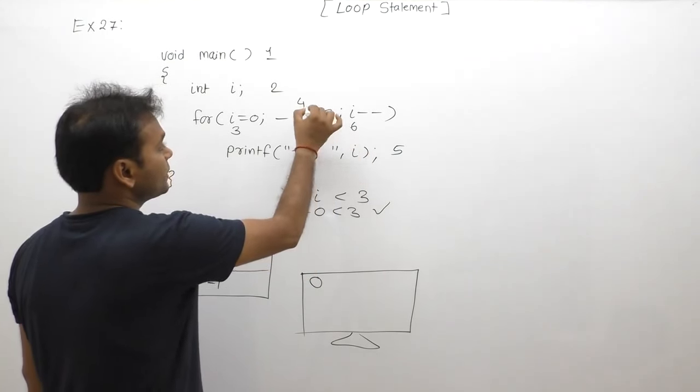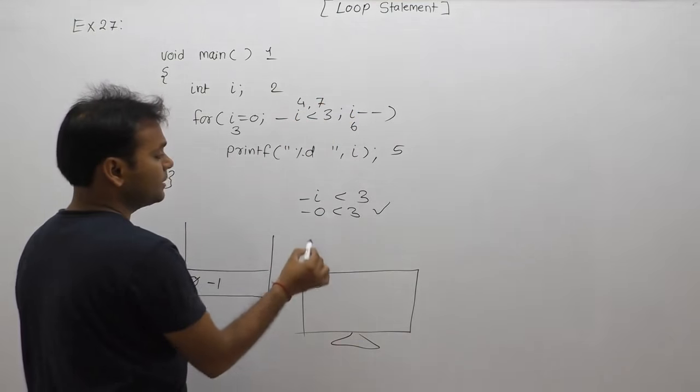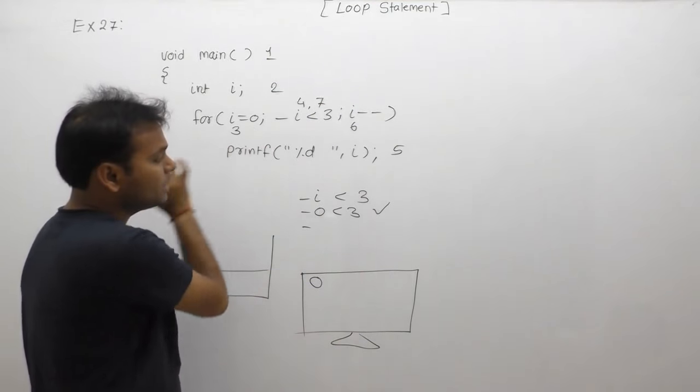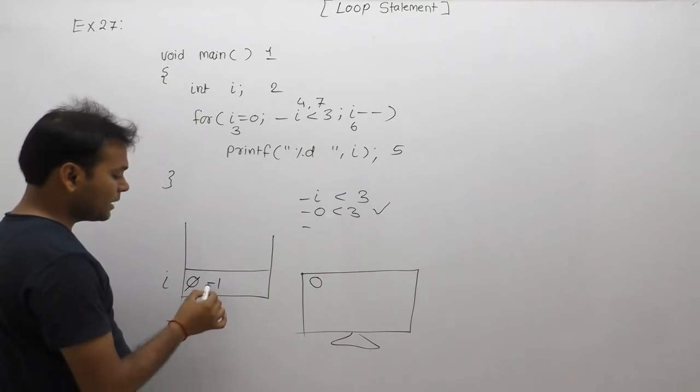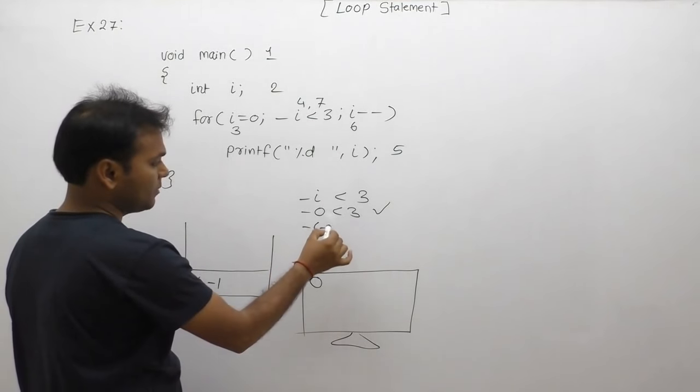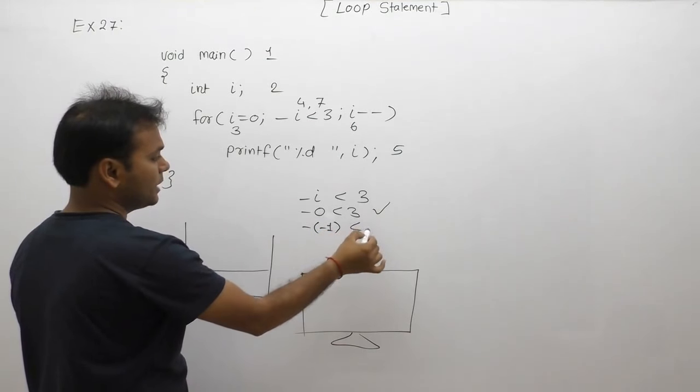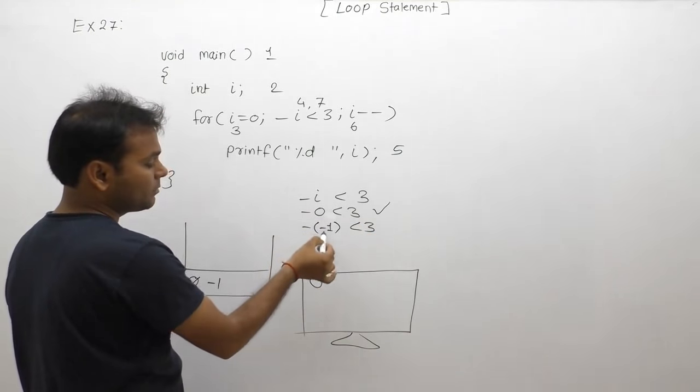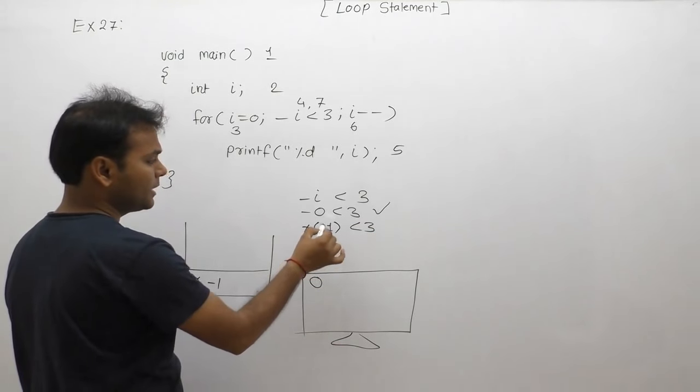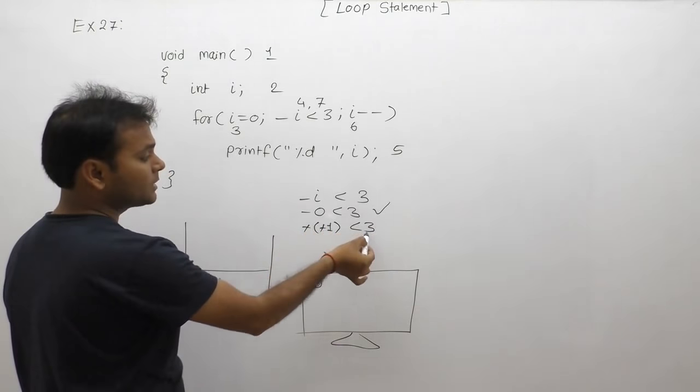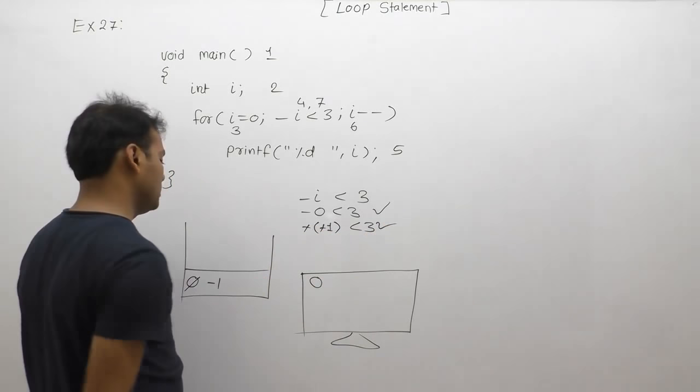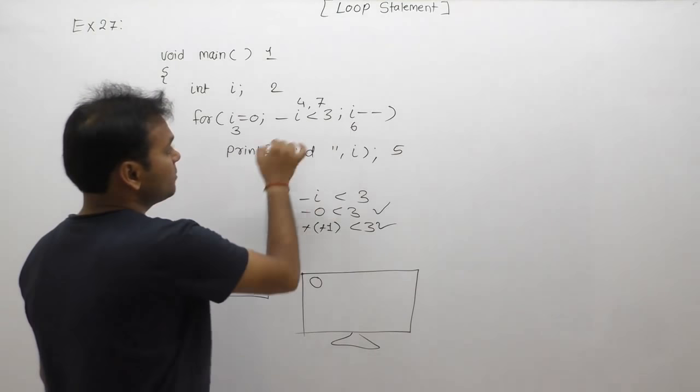Seventh case, again condition testing. Condition testing, minus is already available. Plus in i's place, minus 1 is there. Value of i is minus 1 less than 3. Subsequently, minus minus multiplication is positive 1, means it is cancelled plus 1. 1 less than 3, condition is again true. Condition true, then again body.